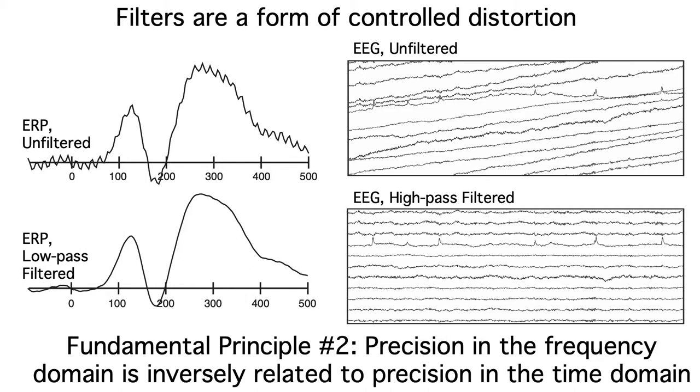Often, the reduction in temporal resolution is so small that you won't even notice it. But if you heavily filter the data, you can really mess up the time domain ERP waveform.